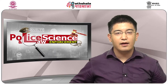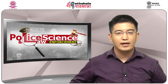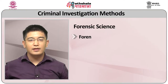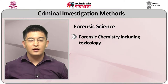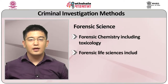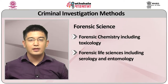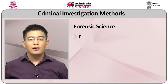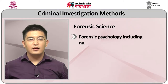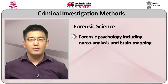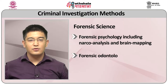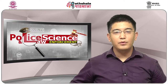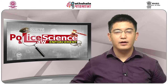Apart from the scientific methods, there are various branches of forensic science which aid in criminal investigation: forensic chemistry including toxicology; forensic life sciences including serology and entomology; forensic physics including ballistics and documents; forensic psychology including narcoanalysis and brain mapping; forensic odontology; forensic anthropology; and computers as a scientific method for investigation.